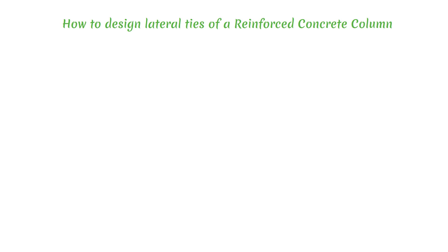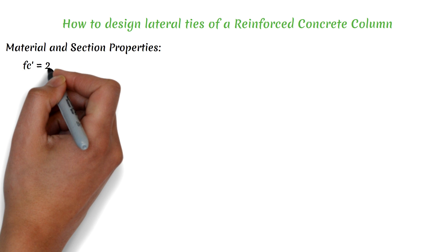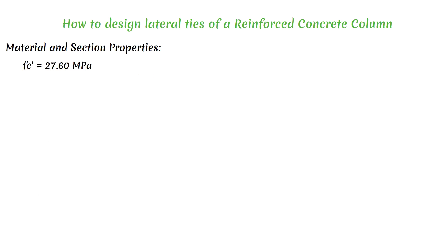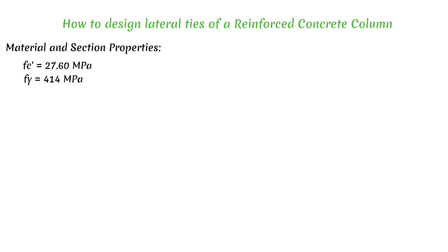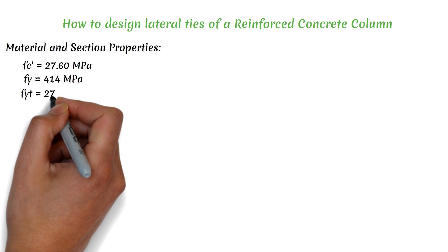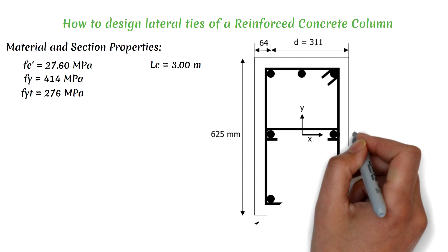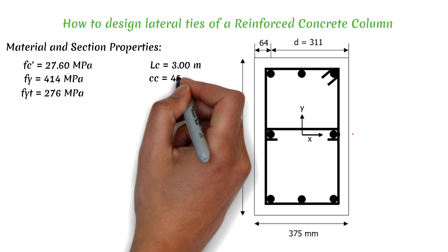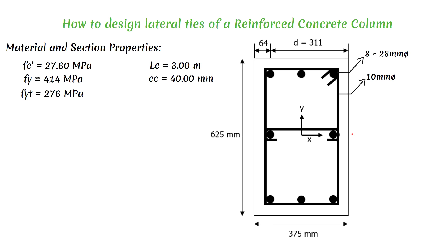To start the design, we will consider these material and section properties. FC' (concrete strength) equals 27.6 MPa or 4 ksi. FY (rebar yield strength) equals 414 MPa or 60 ksi. FYT (shear reinforcement yield strength) equals 276 MPa or 40 ksi. The clear span length of the column is 3 meters. The column dimension is 375 mm by 625 mm with a concrete clear cover of 40 mm. The main reinforcement is 8 pieces of 28 mm diameter rebar, and we will be using 10 mm rebar for the lateral ties.